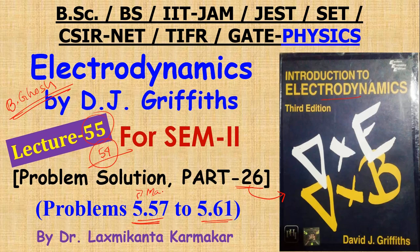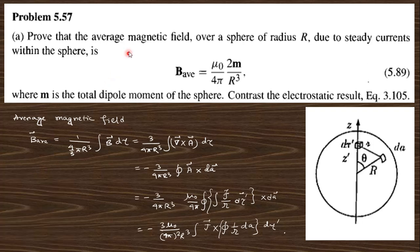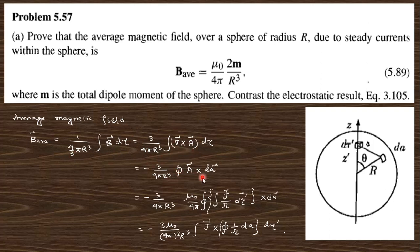Let's start with question 5.57, which says: prove that the average magnetic field over a sphere of radius R is given by that formula, where m is the total dipole moment of the sphere, and construct the electrostatic result equation 3.105. The average magnetic field will be the integration of the magnetic field throughout the total volume, and B equals curl of A, which can be written in this form.